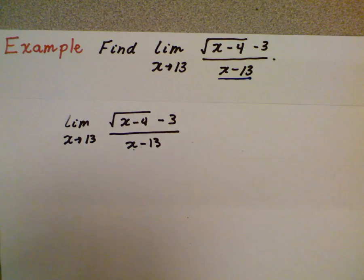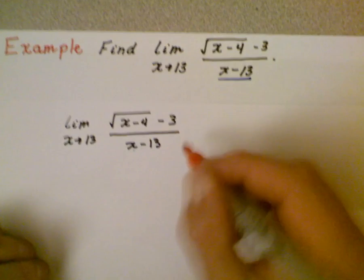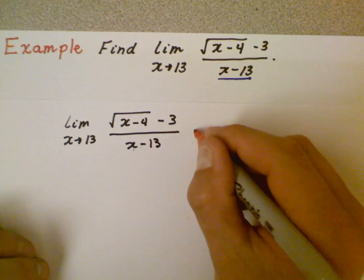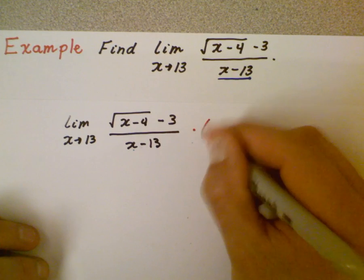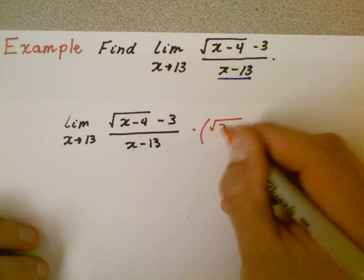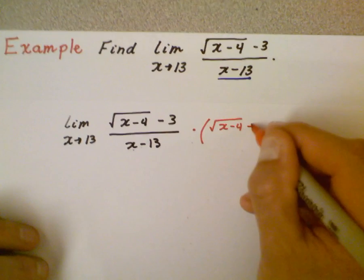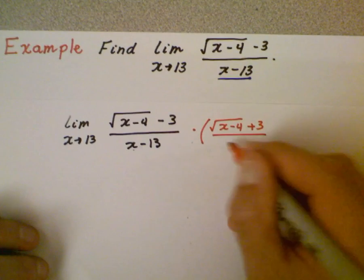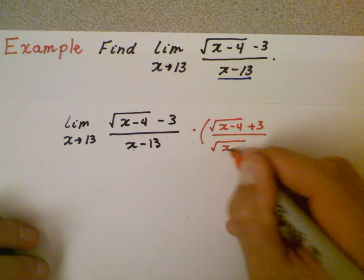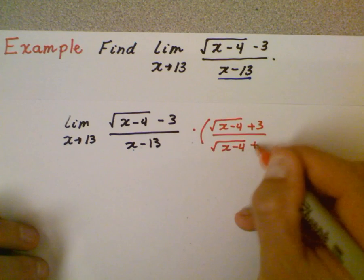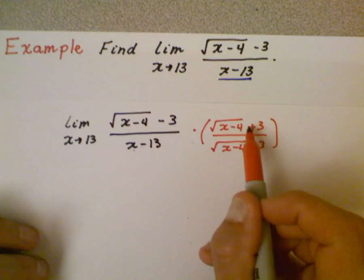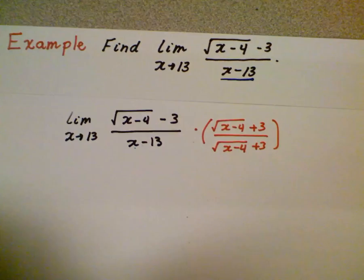So what I'm going to do now is rationalize this numerator. I've got to get rid of this x minus 13. So I'm going to look at the numerator and say well, I'm going to use the conjugate here that's rationalization. So it's the same terms just opposite signs in between. So notice it's the same thing here but plus 3 and you've got to do the same thing to the top and bottom.